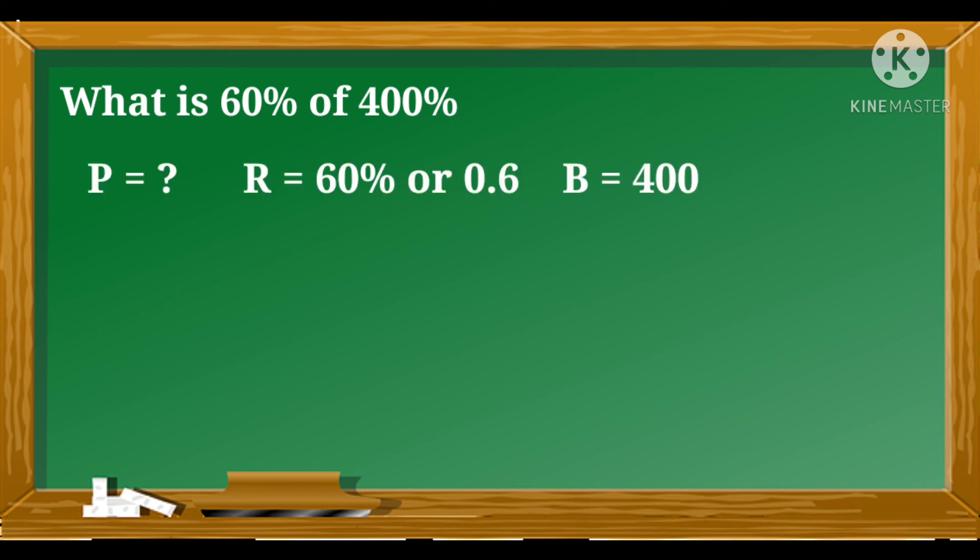And for our last example, what is 60% of 400? P is unknown. The rate is 60% or 0.6 and the base is 400.